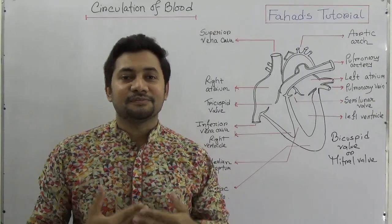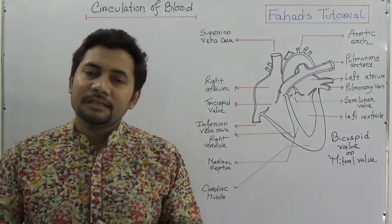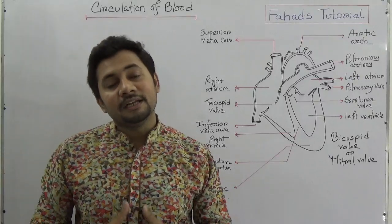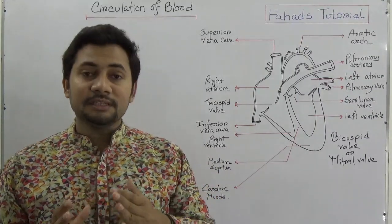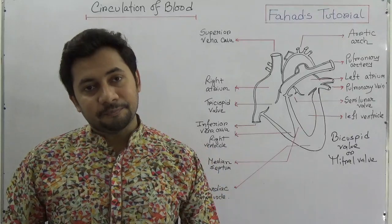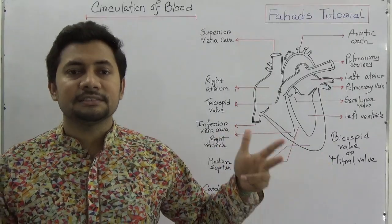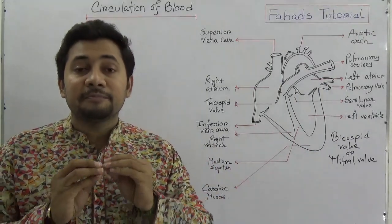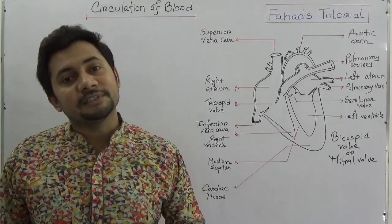Welcome to Fahad's tutorial. This video is about blood circulation through the human heart. As we know the structure of the human heart and its parts, now we need to understand how blood is circulating. There are two types of circulation: open and closed. The human body uses a closed circulatory system. There are systemic, pulmonary, portal, and coronary circulations, but in this video I'm going to explain very shortly and primarily the double circulation.